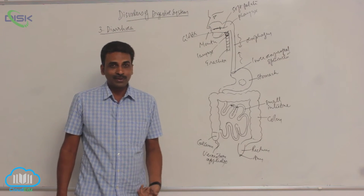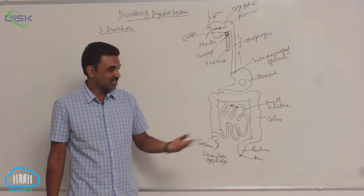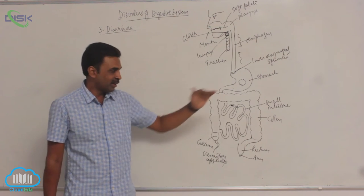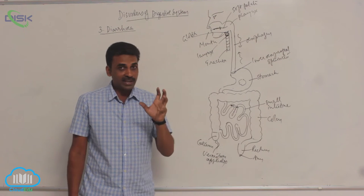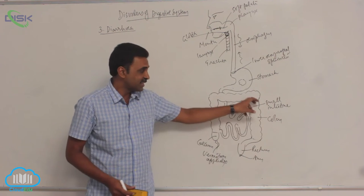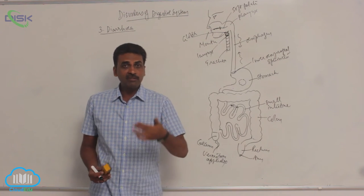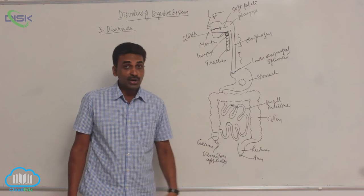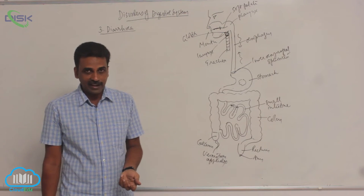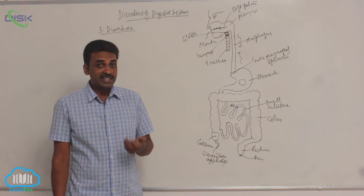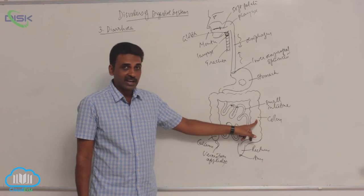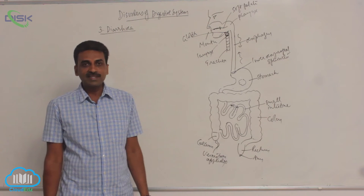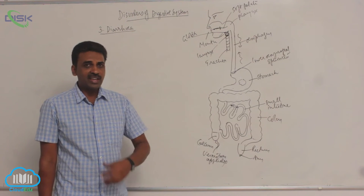So that frequent profuse discharge of the contents of gut outside is called as diarrhea. Frequent and profuse, lot of fluids present inside the gut is coming outside. The frequent and profuse discharge of the contents of the gut, I mean the large intestine, being pushed outside is called as diarrhea. Diarrhea can be acute or chronic.